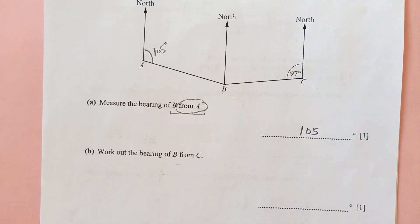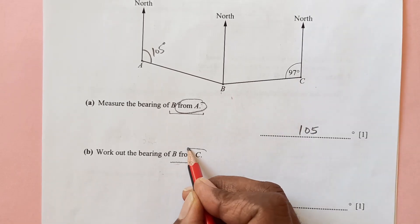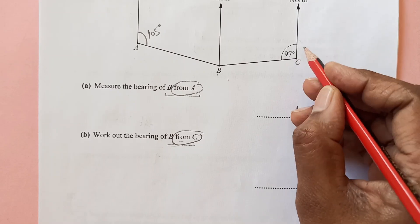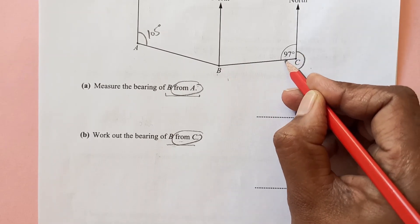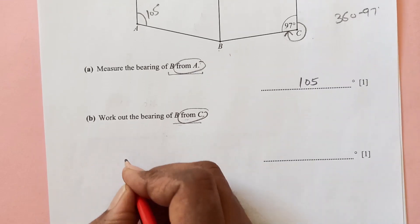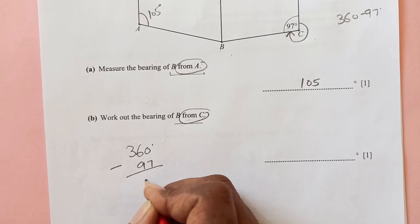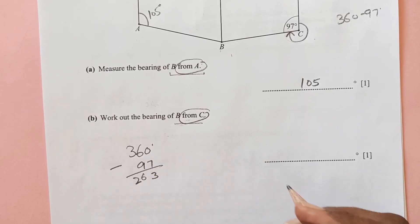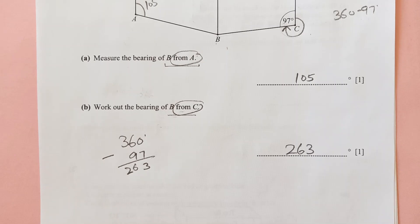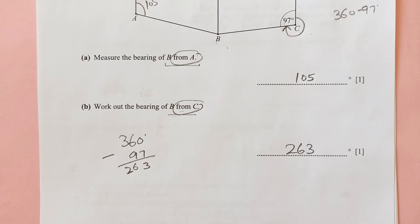Work out the bearing of B from C. From point C, measure the clockwise angle to the line CB. The angle on the diagram is 97 degrees, but since bearings go clockwise from north through 360 degrees, the bearing is 360 − 97 = 263 degrees. That's it for this video — remaining questions will be in the next part. Please like, share, and subscribe. God bless!